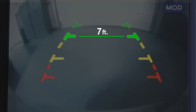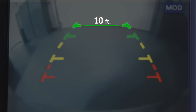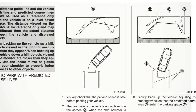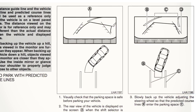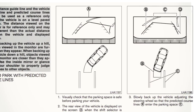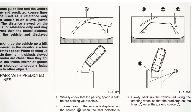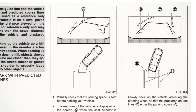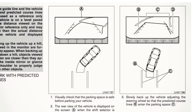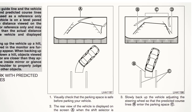The first green line designates an object approximately 7 feet away. The second green line designates an object approximately 10 feet away. When the steering wheel is turned, predictive course lines are also displayed on the screen. These lines show the approximate path the vehicle will take and move in conjunction with how far the steering wheel is turned.